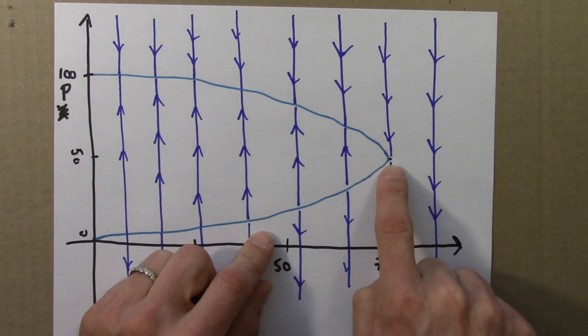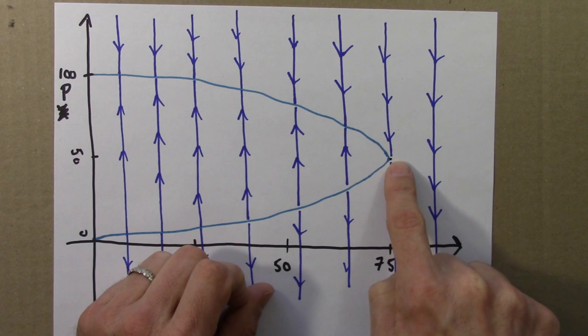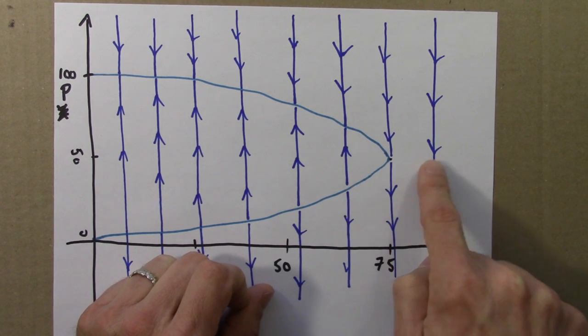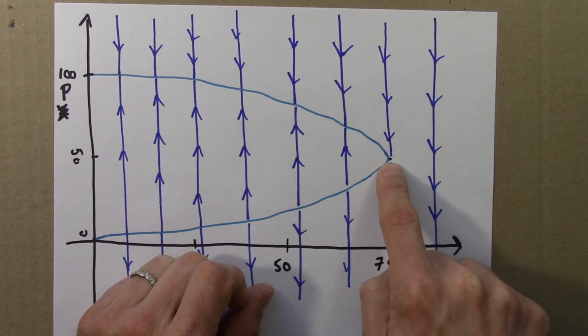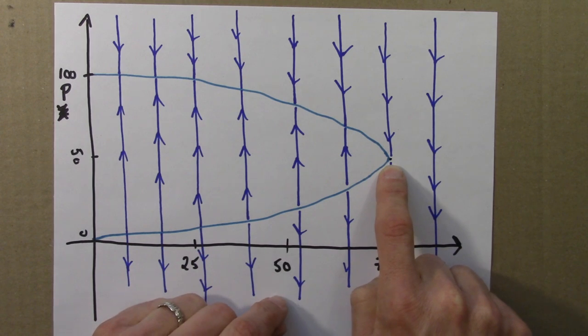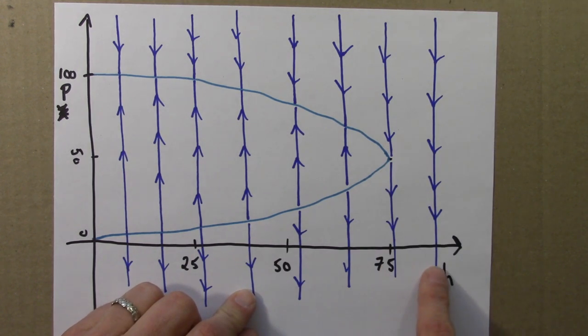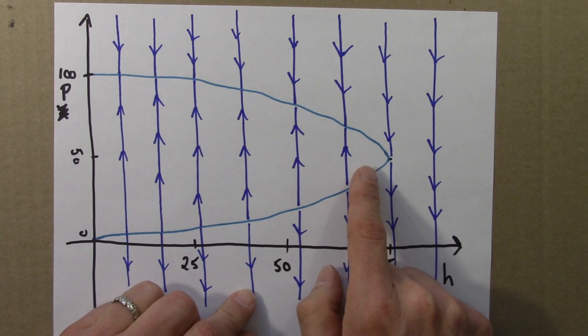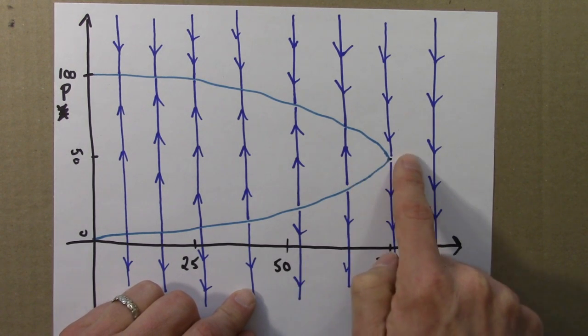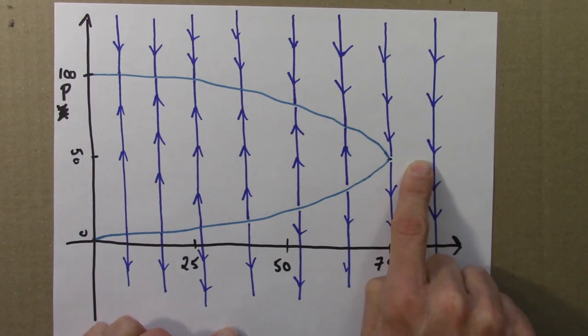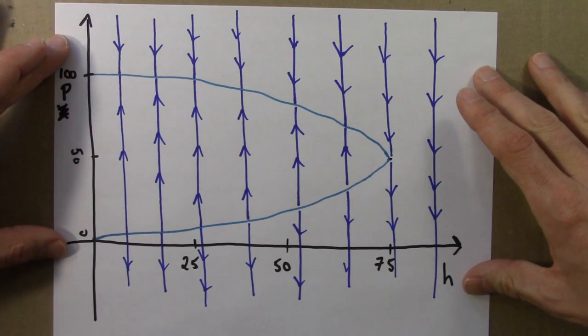So you'll say this point here is a bifurcation. Right at this point, we're changing from two fixed points, one stable, one unstable, to no fixed points. So this point here would be where the bifurcation occurs. It's a sudden change in the qualitative, sort of overall global features of the system as a parameter is changed. So as we vary h from one side of 75 to another, the system jumps from having two fixed points of different stabilities to zero fixed points. So this is an example of a bifurcation. And this type of diagram is known as a bifurcation diagram.